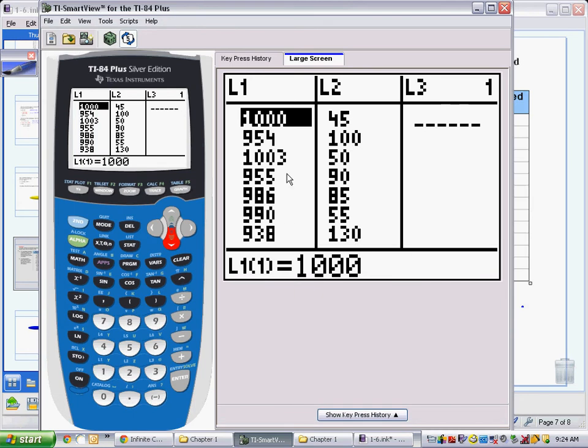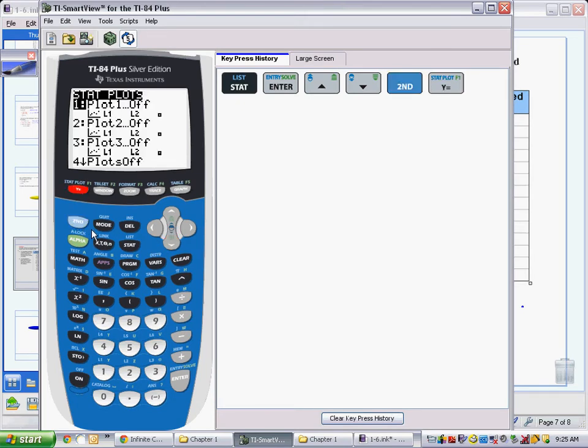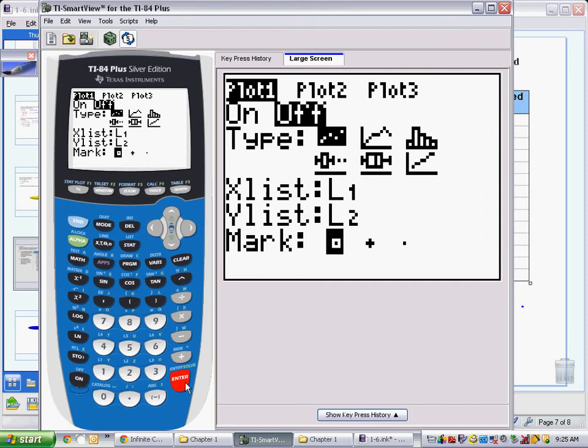Once I have my data entered into list 1 and list 2, I can go ahead and plot it. To plot the data, I am going to go to my stat plot feature, which is the second y equals. I now have several options. I can use any of these plots, but we are going to use the first one. I will press enter to go in.